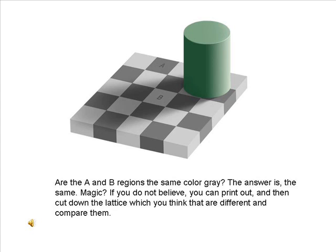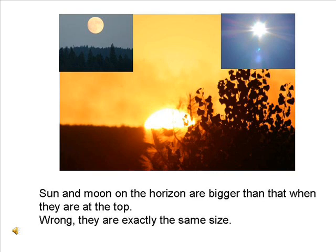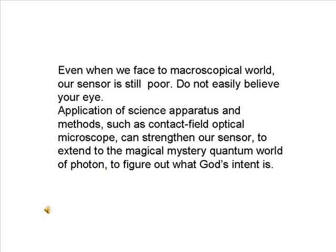Are regions A and B the same color gray? The answer is: yes, the same — magic! If you do not believe it, you can print it out and cut down the squares you think are different and compare them. Vertical lines seem to be bending, but in fact they are straight and parallel to each other — this is the illusion of curves. The Sun and Moon on the horizon appear bigger than when they are at the top, but they are exactly the same size. Even when we face the macroscopic world, our senses are still poor — do not easily believe your eyes. Application of scientific apparatus and methods, such as the Contact Field Optical Microscope, can strengthen our senses and extend into the magical mystery quantum world of photon, to figure out what the underlying intent is.